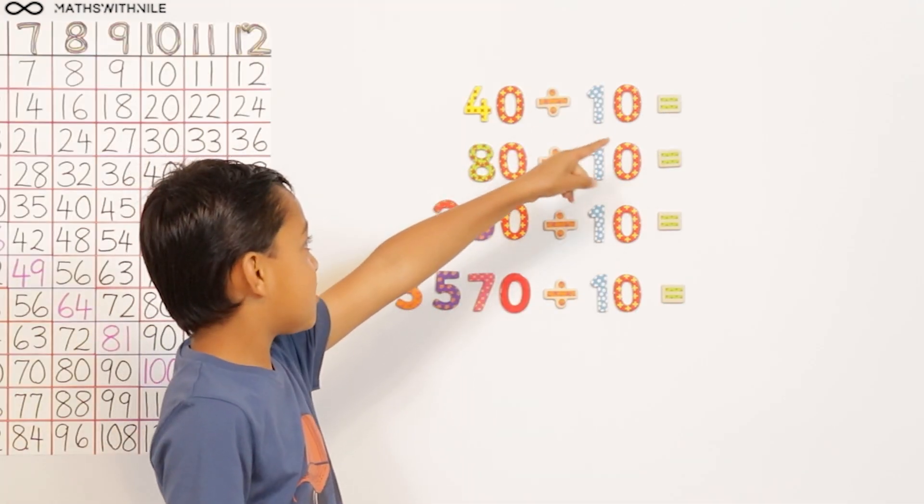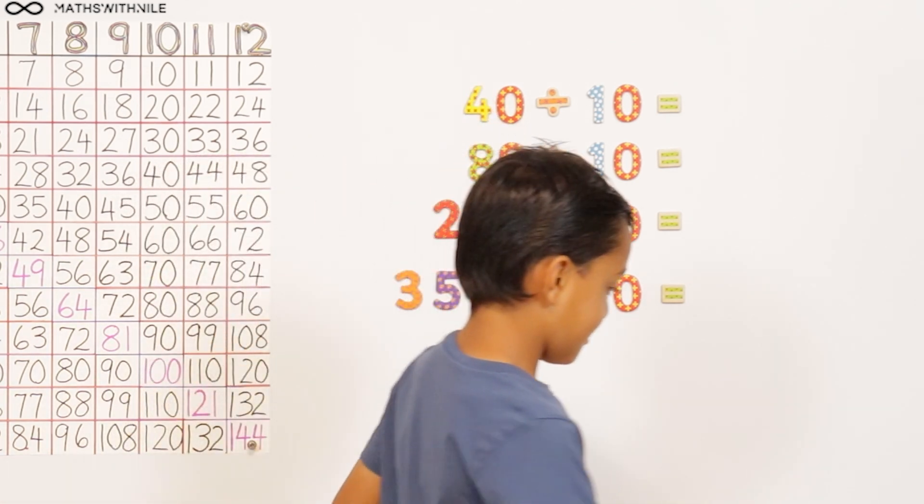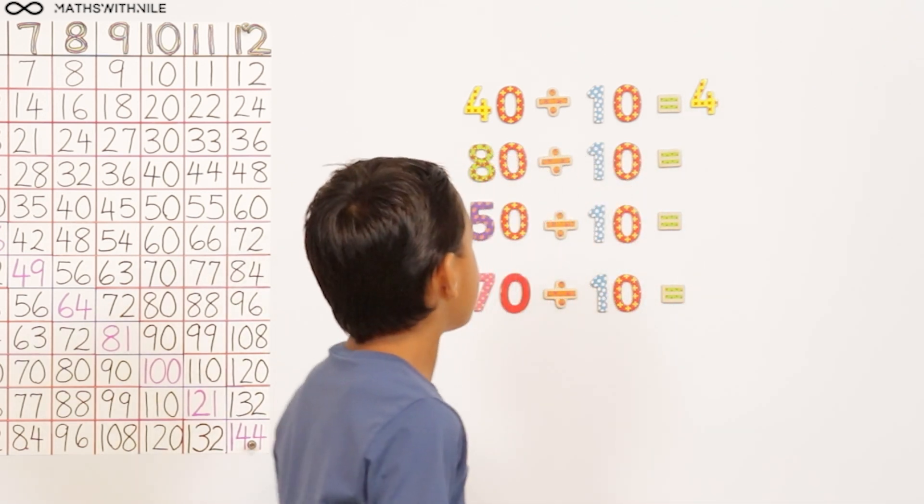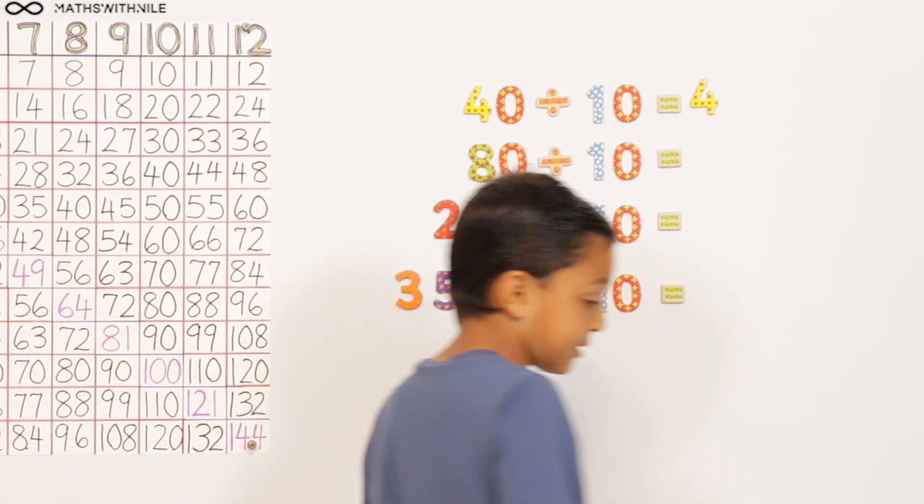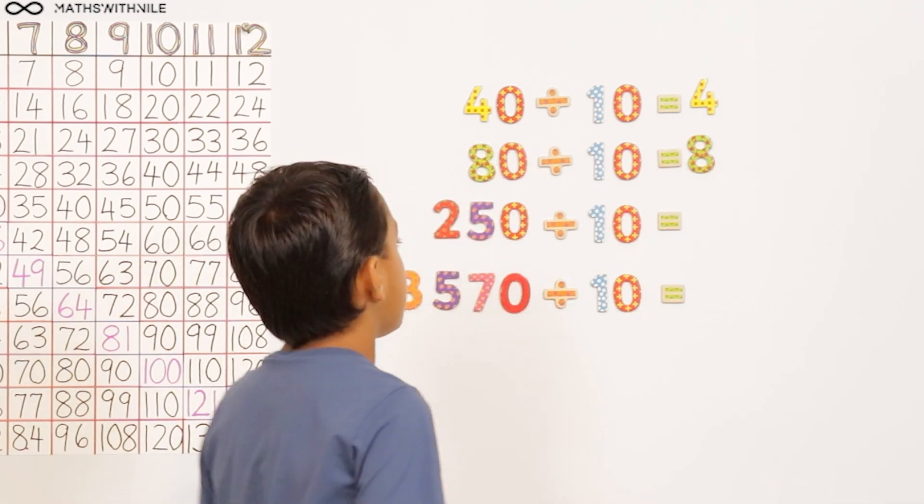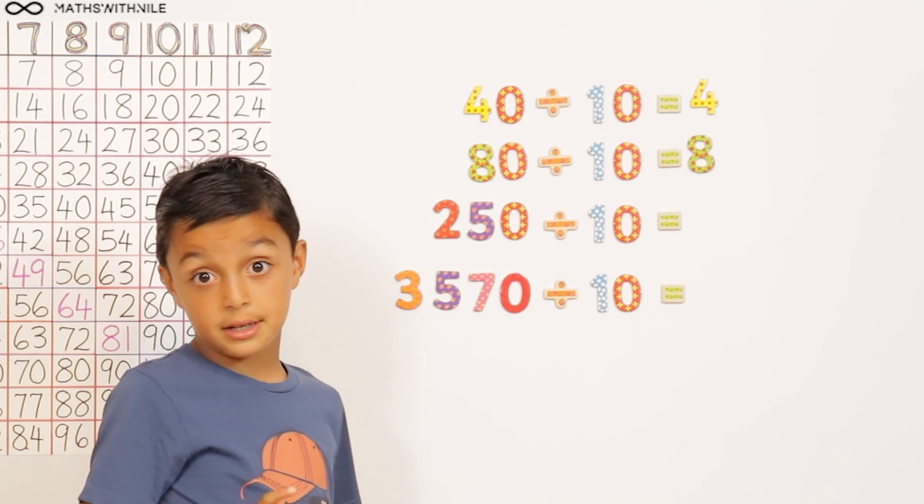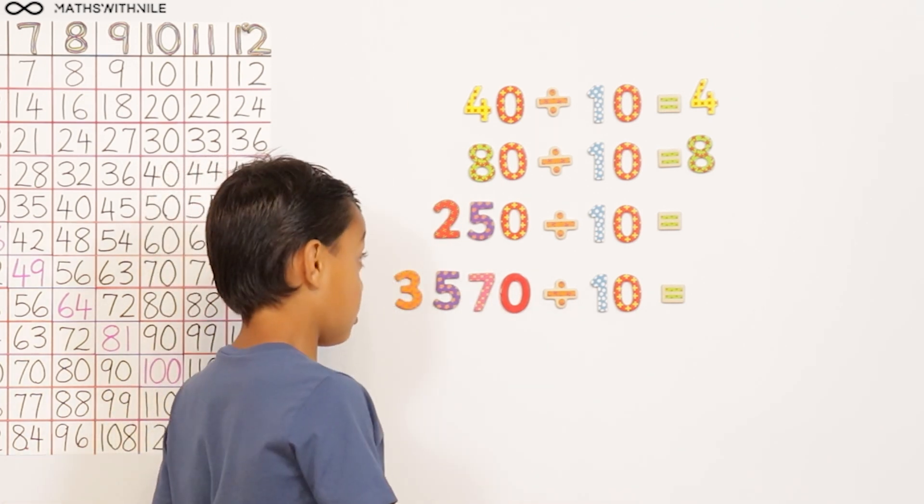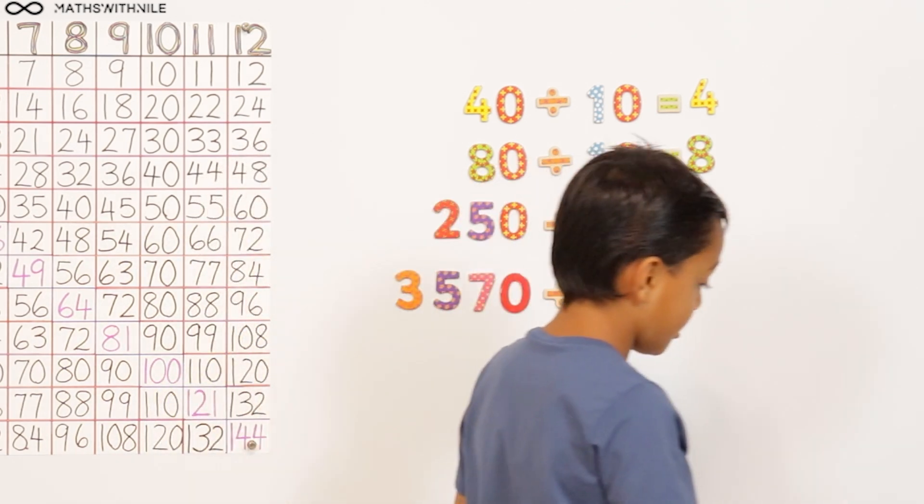40 divided by 10, you take away the zero, so it equals 4. Very good. And then 80 divided by 10, do the same thing, just take off the zero, so it equals 8. And then 250 divided by 10. Well, it's a bigger number, but it's still, take away the zero, 25. Very good, Niall.